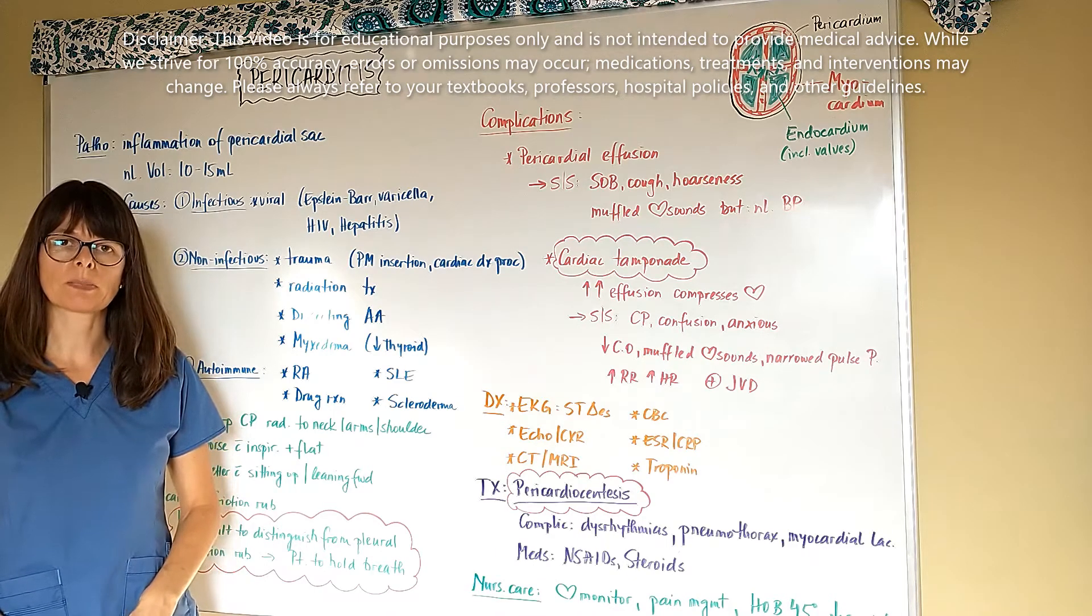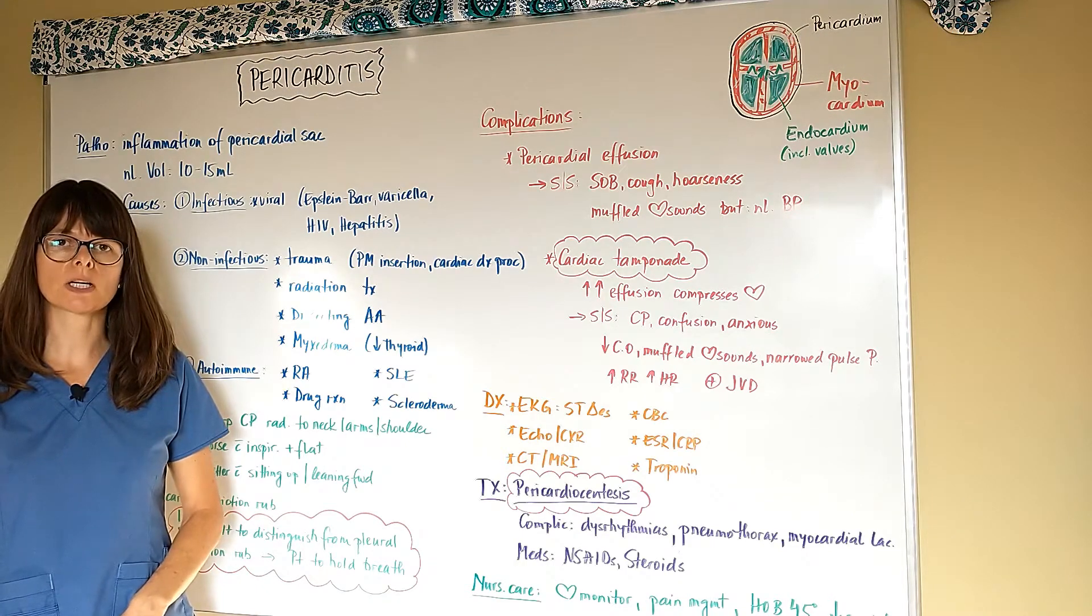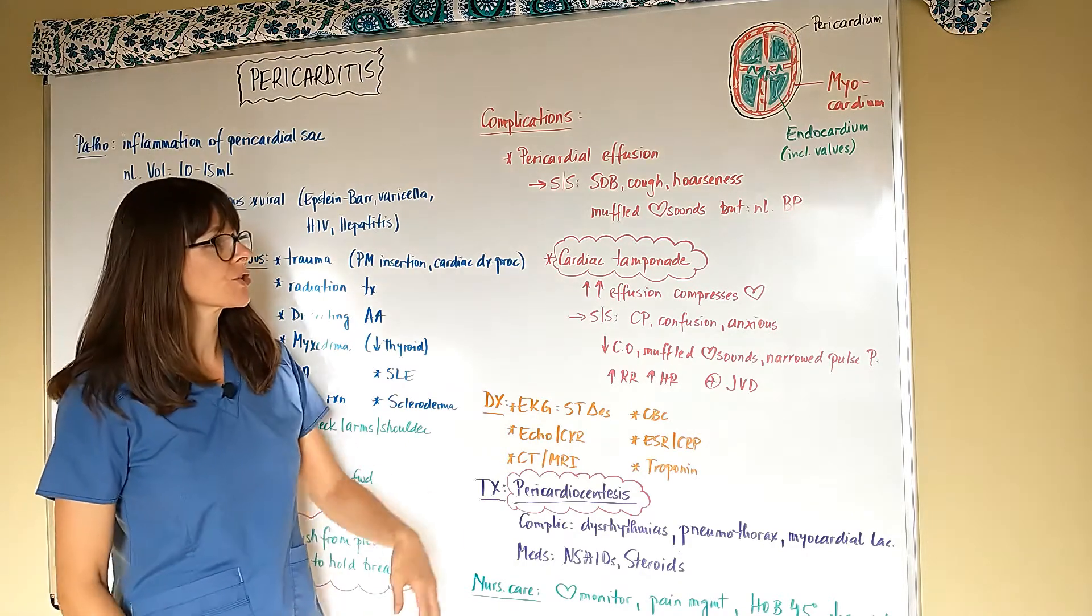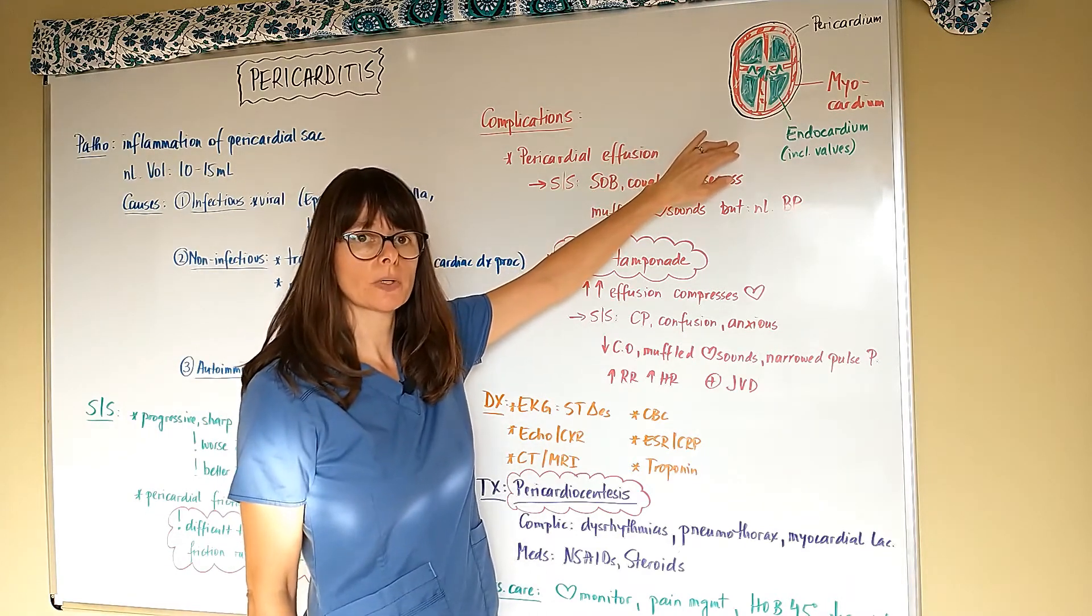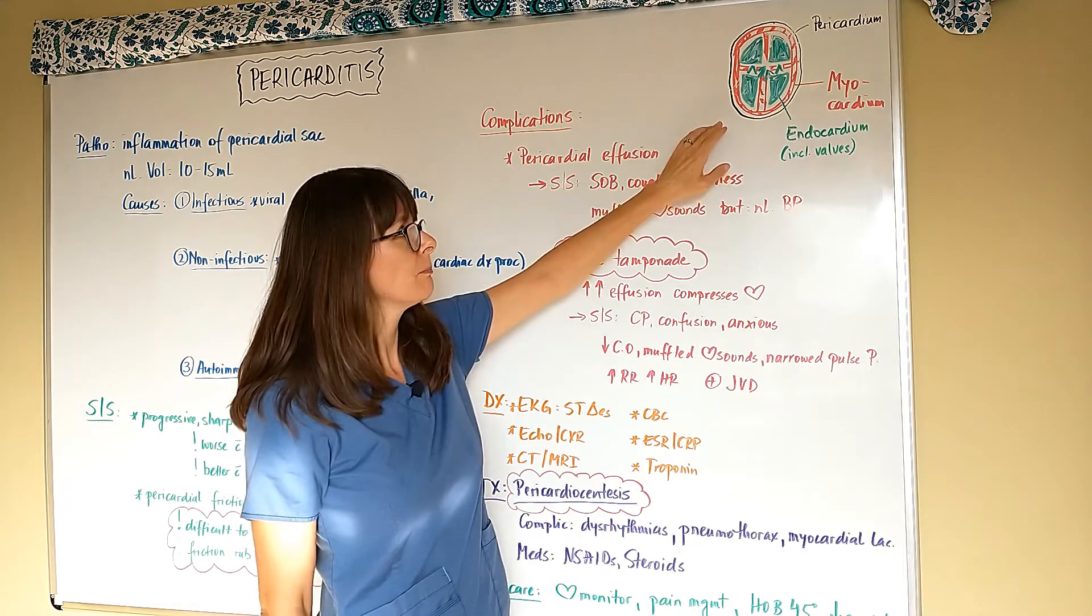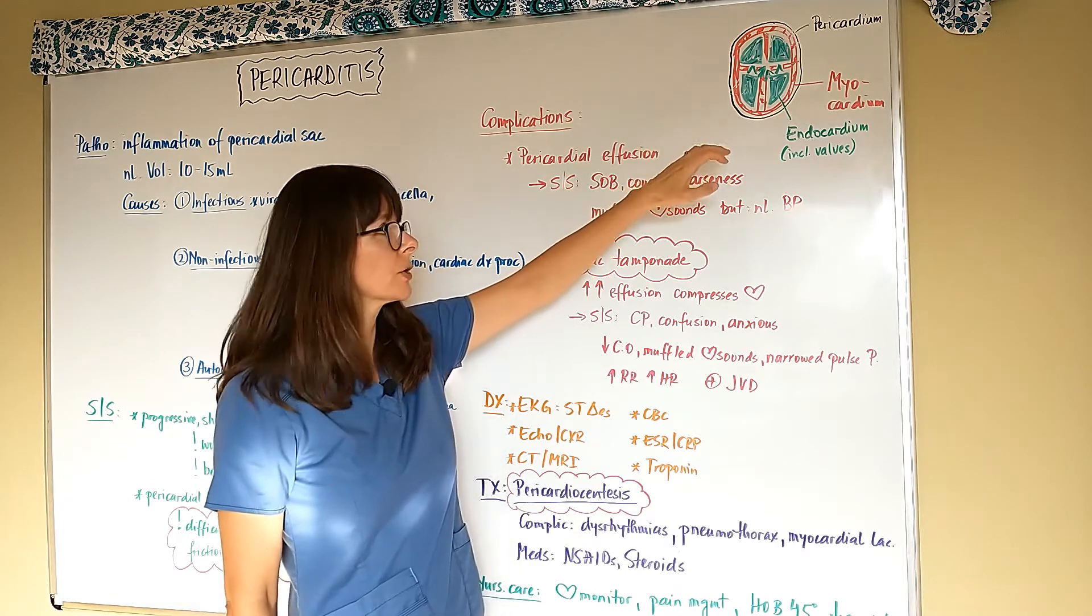Hi, welcome to Nursing School Explained. This video on pericarditis. As a refresher, the heart has three layers: the innermost layer is the endocardium and also includes the heart valves. The middle layer, the actual muscle layer, is called the myocardium.